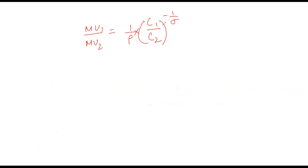We can write MU1 by MU2 as C1 by C2 to the power, so you can write it in this way. Okay, now take log of this. So I can take log of this: log 1 by rho minus 1 by sigma log C1 by C2.